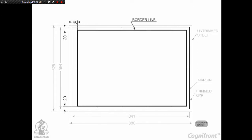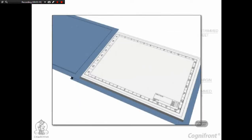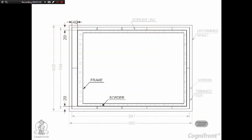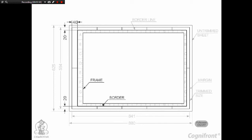Clear working space is obtained by drawing border lines. More space is kept on the left hand side for the purpose of filing or binding if necessary. When prints are to be preserved or stored in a cabinet without filing, equal space may be provided on all sides. SP46-2003 recommends borders of 20 mm width for sheet sizes A0 and A1, and 10 mm for sizes A2, A3, A4 and A5. The frame shows the clear space available for the drawing purpose.